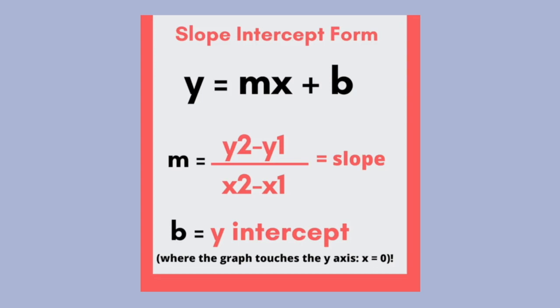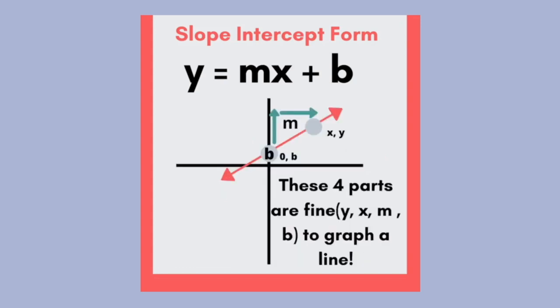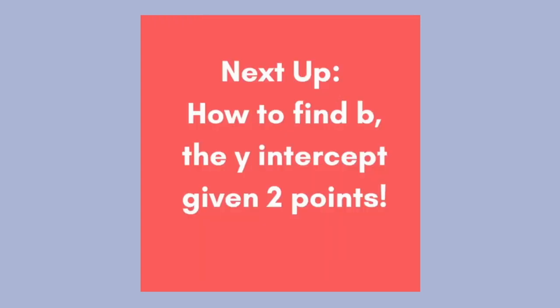y equals mx plus b. m is the slope of the line, while b is the y-intercept. These four parts are fine to graph a line.